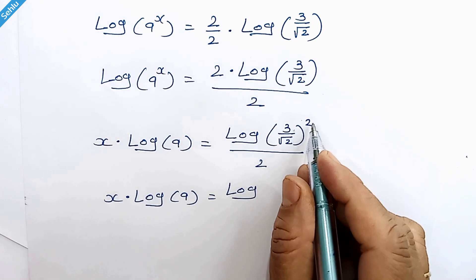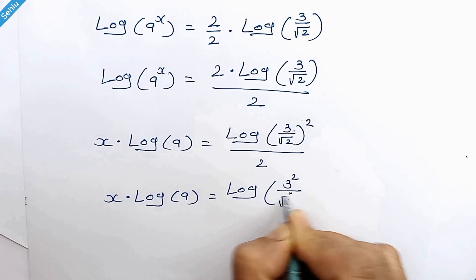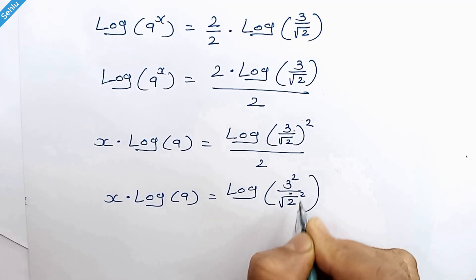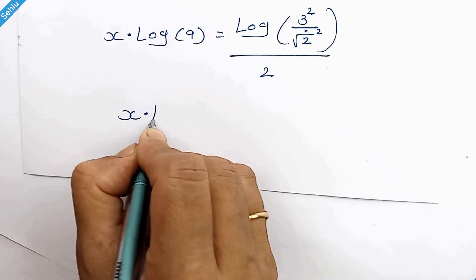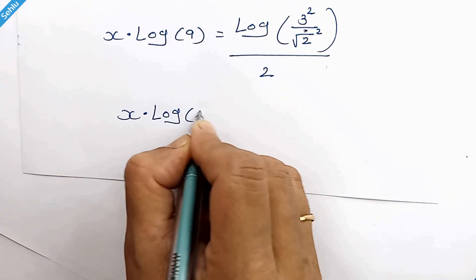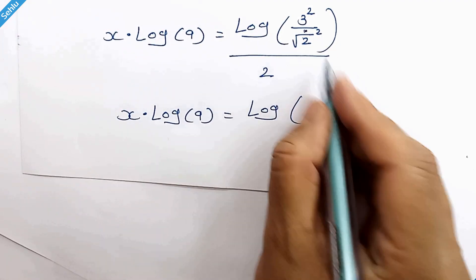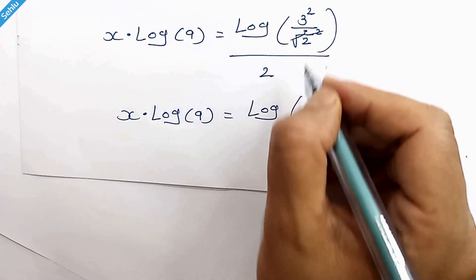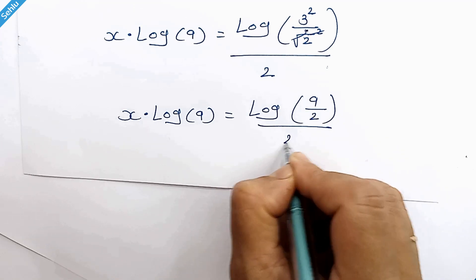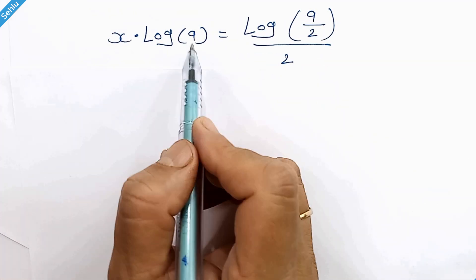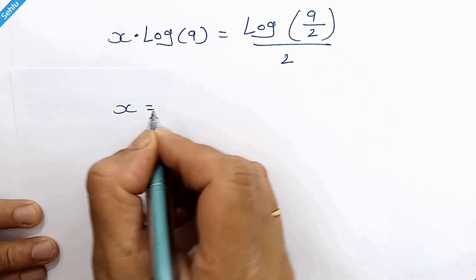Let's apply this square in the bracket, so it will be 3 squared over square root of 2 squared. We have x times log of 9 is equal to log of 9 over 2, since 3 squared is 9 and the square root squared will cancel to give 2.